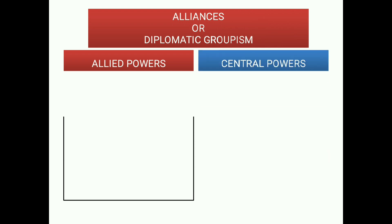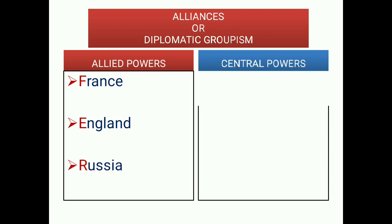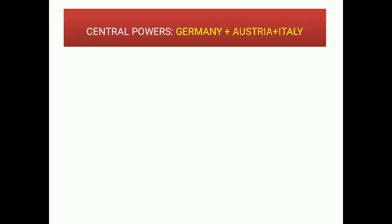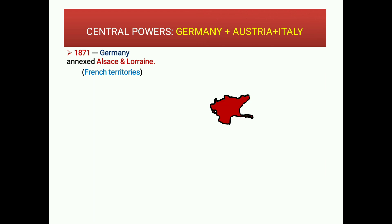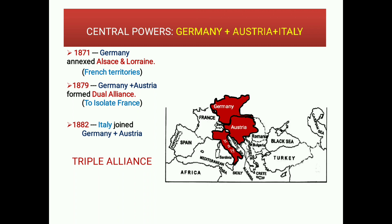Alliances — diplomatic groupism: In 1871, Germany annexed Alsace and Lorraine, which were French territories. In 1879, Germany and Austria formed the Dual Alliance to isolate France. In 1882, Italy joined Germany and Austria, thus forming the Triple Alliance of the Central Powers: Germany, Austria, and Italy.